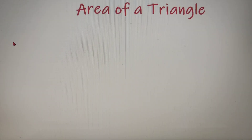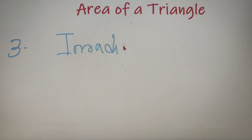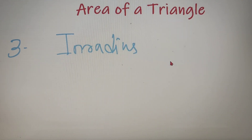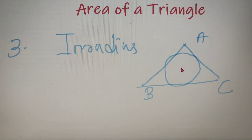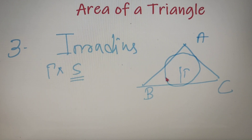The third method for calculating the area of a triangle is by using the inradius of the triangle. The inradius is the radius of the largest possible circle that can be drawn inside a triangle, touching all three sides. So suppose we have a triangle ABC and the largest possible circle that can be drawn inside the triangle has radius equal to small r. Then the area of this triangle is equivalent to r into S, where S is the semiperimeter of the triangle.